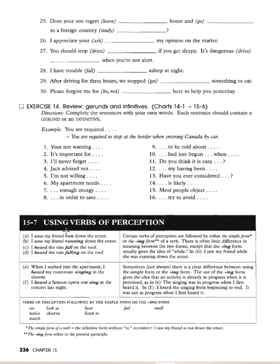'While I walked into the apartment, I heard my roommate singing in the shower.' 'I heard a famous opera star sing at the concert last night.' Sometimes there is a clear difference: the -ing form gives the idea that an activity was already in progress when perceived — 'the singing was in progress when I first heard it.' The simple form suggests the action was heard from beginning to end — 'it was not in progress when I first heard it.'